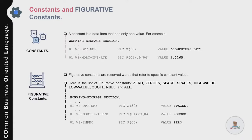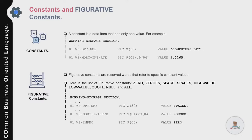Using SPACES as a figurative constant means all 30 bytes of DEPARTMENT-NAME will be initialized with spaces, and you can override this value during execution. Similarly, MORTGAGE-INTEREST-RATE uses ZEROS, meaning all five bytes will be filled with zeros. For EMPLOYEE-NUMBER, the figurative constant ZERO is used, meaning the initial value will be zero.